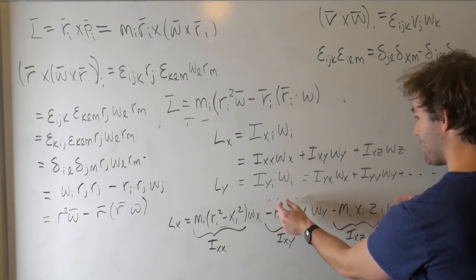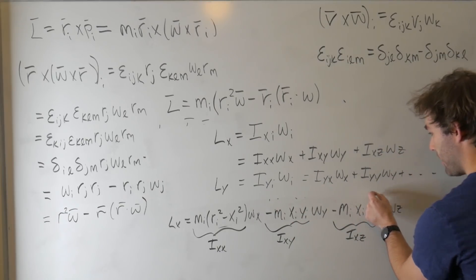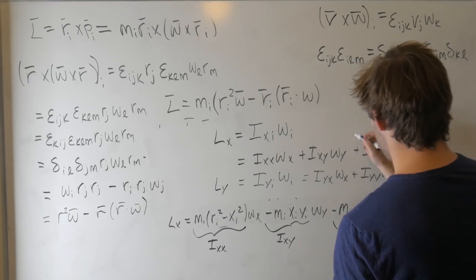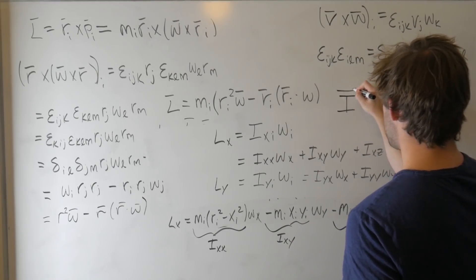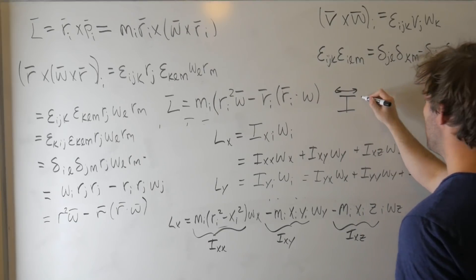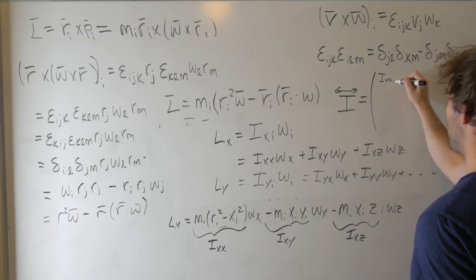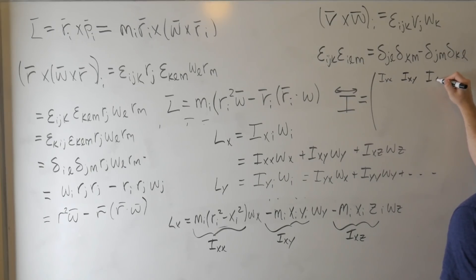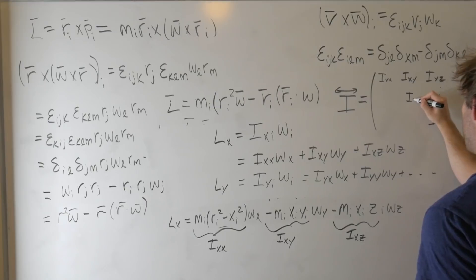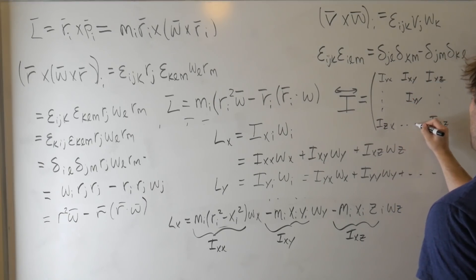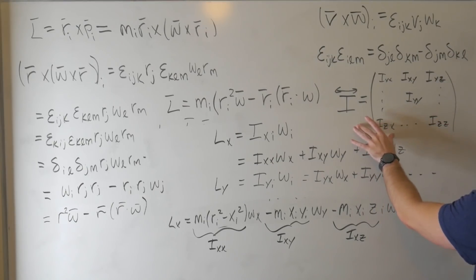And then if we were to collect all of these coefficients that we're seeing here, we can put them and gather them into a square matrix. So we can define something that we can call I, big I, sometimes you might see it with a little double arrow on it, that's equal to the collection of all of these coefficients. So we've got I_xx, I_xy, I_xz, dot dot dot, I_zz, I_yy. And we call this matrix the inertia tensor.